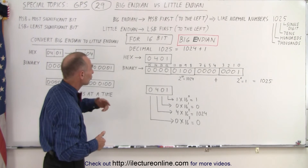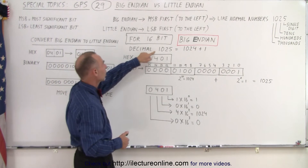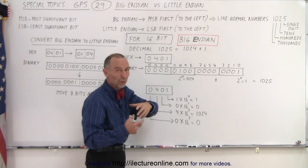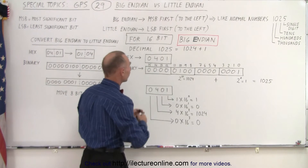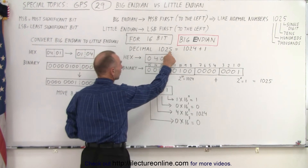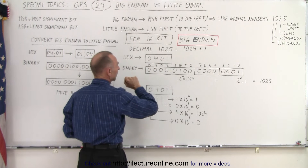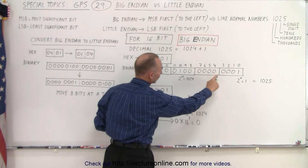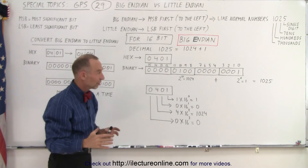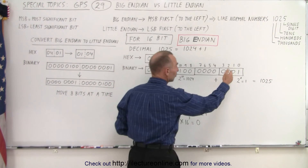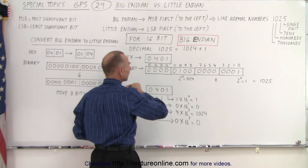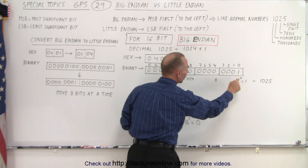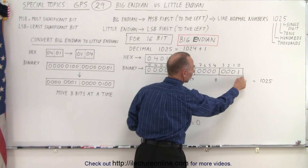To illustrate, let's use a 16-bit number and convert the decimal number 1025. Essentially that's equal to 1024 plus 1, and this is in Big Endian format. In hex, 1025 would be 0x0401; in binary it would be four zeros, then 1, then four zeros, then 0001. This covers bits 0 all the way to bit 15.